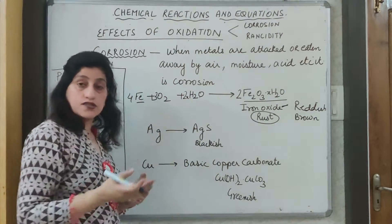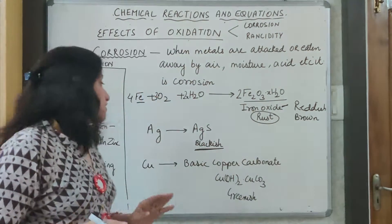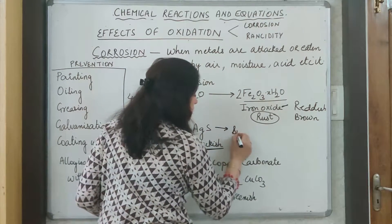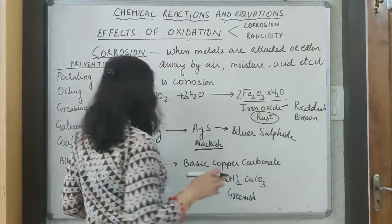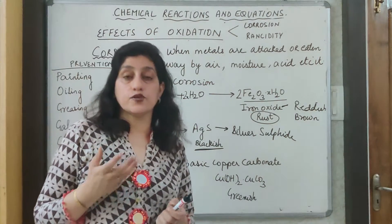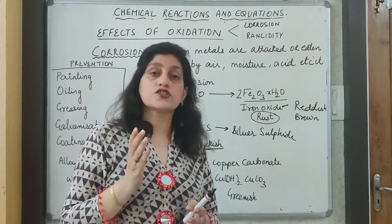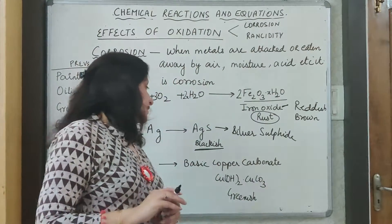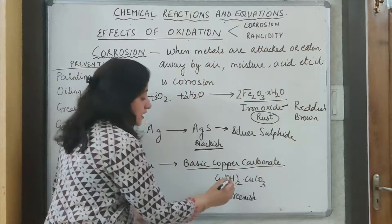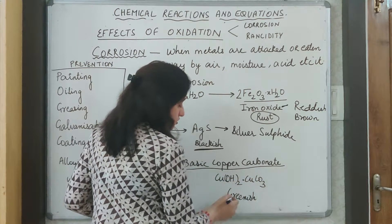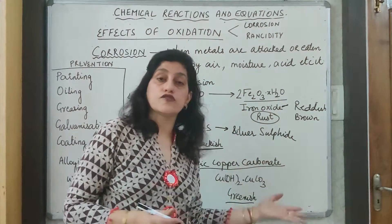Silver also gets oxidized and changes to a blackish color. You must have seen that silver articles generally change their color and become blackish. This is due to the formation of silver sulfide as a result of oxidation of silver. Copper utensils or copper articles generally develop a greenish coating during the rainy season. This greenish coating is also formed by oxidation of the metal and is called basic copper carbonate — formula: Cu(OH)₂·CuCO₃ — and it is greenish in color.